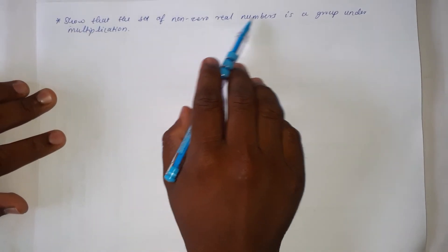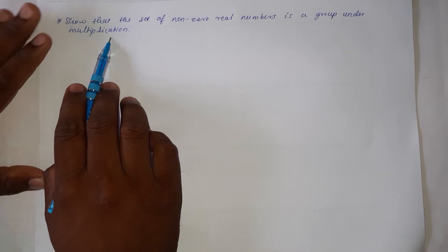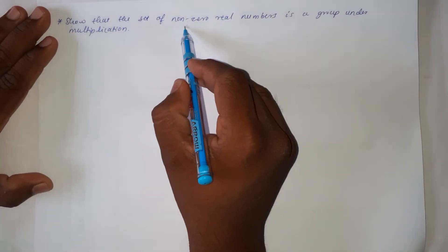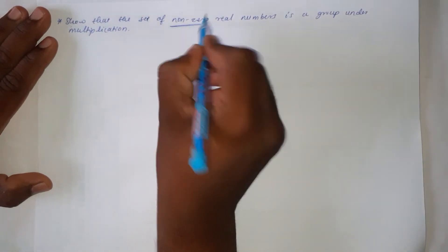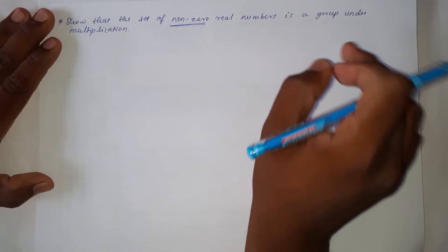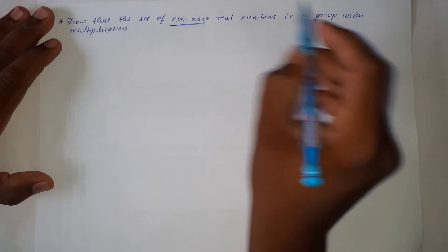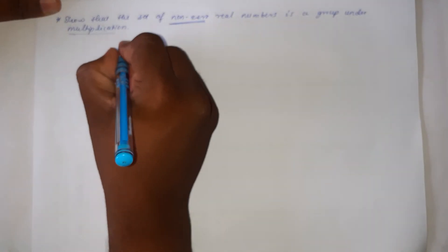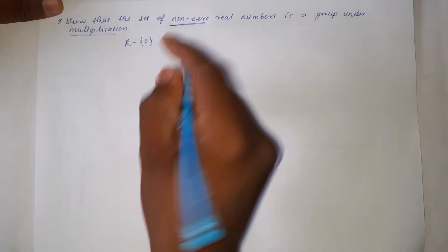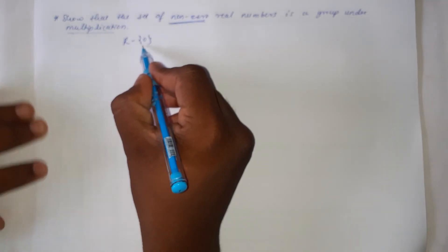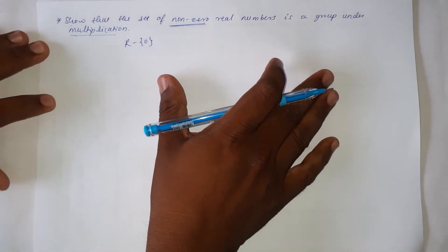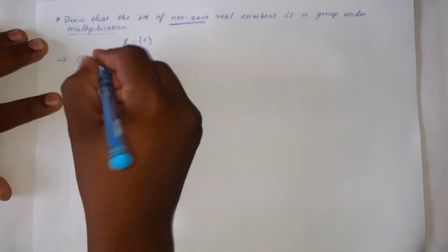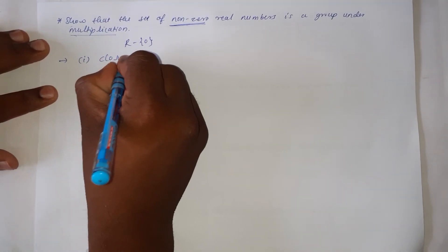The next example is: show that the set of nonzero real numbers is a group under multiplication. Here the given set is the nonzero real numbers — that is, the set of real numbers except 0, written as R minus {0} — and the binary operation is multiplication.